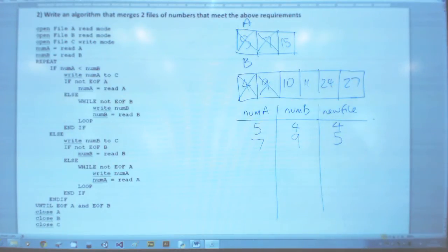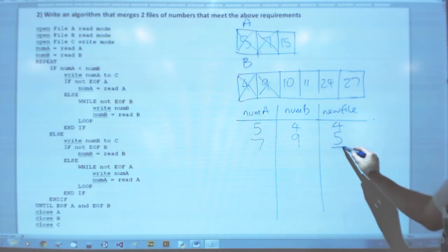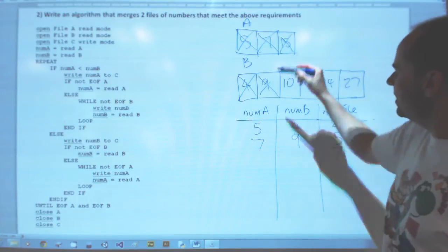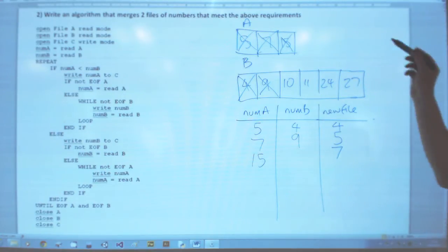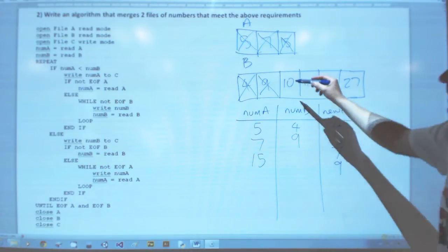We're not at the end so we're alright to read in. So seven and nine we compare. Seven is smaller, that gets written out. We read in another one from A. Now we've exhausted A, so the algorithm will change in a minute. Compare again, so we write out the nine, need to read another item from B.